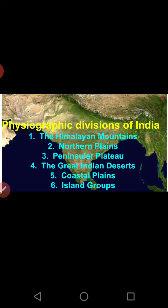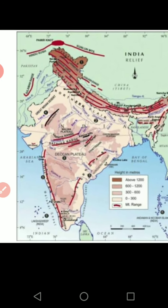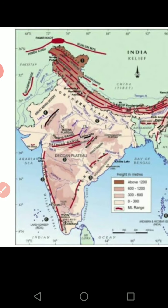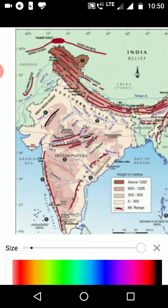Let us start studying each physiographic division of India in detail. On the map these divisions are shown — this is your textbook map. The dark shaded region represents the Himalayan mountain ranges.